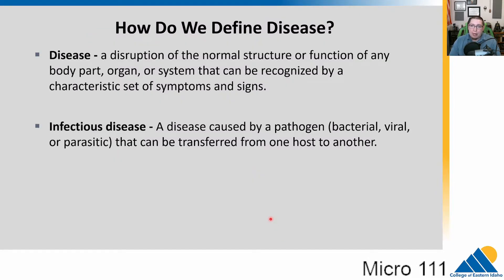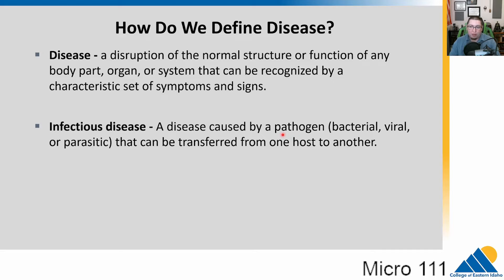How do we define a disease? A disease is a disruption of the normal structure or function of any body part, organ, or system that can be recognized by a characteristic set of signs and symptoms. An infectious disease is a disease caused by a pathogen — like bacteria, virus, fungus, or parasite — and it can be transferred from one host to another.